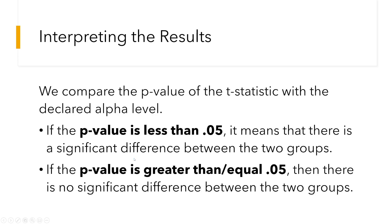Okay, so here are my reminders in interpreting the results of the t-test. So, just like what I mentioned in other lectures, we compare the p-value of the t-statistic with the declared alpha level. And the usual alpha level that we use in behavioral sciences, my field is psychology, is 0.05.